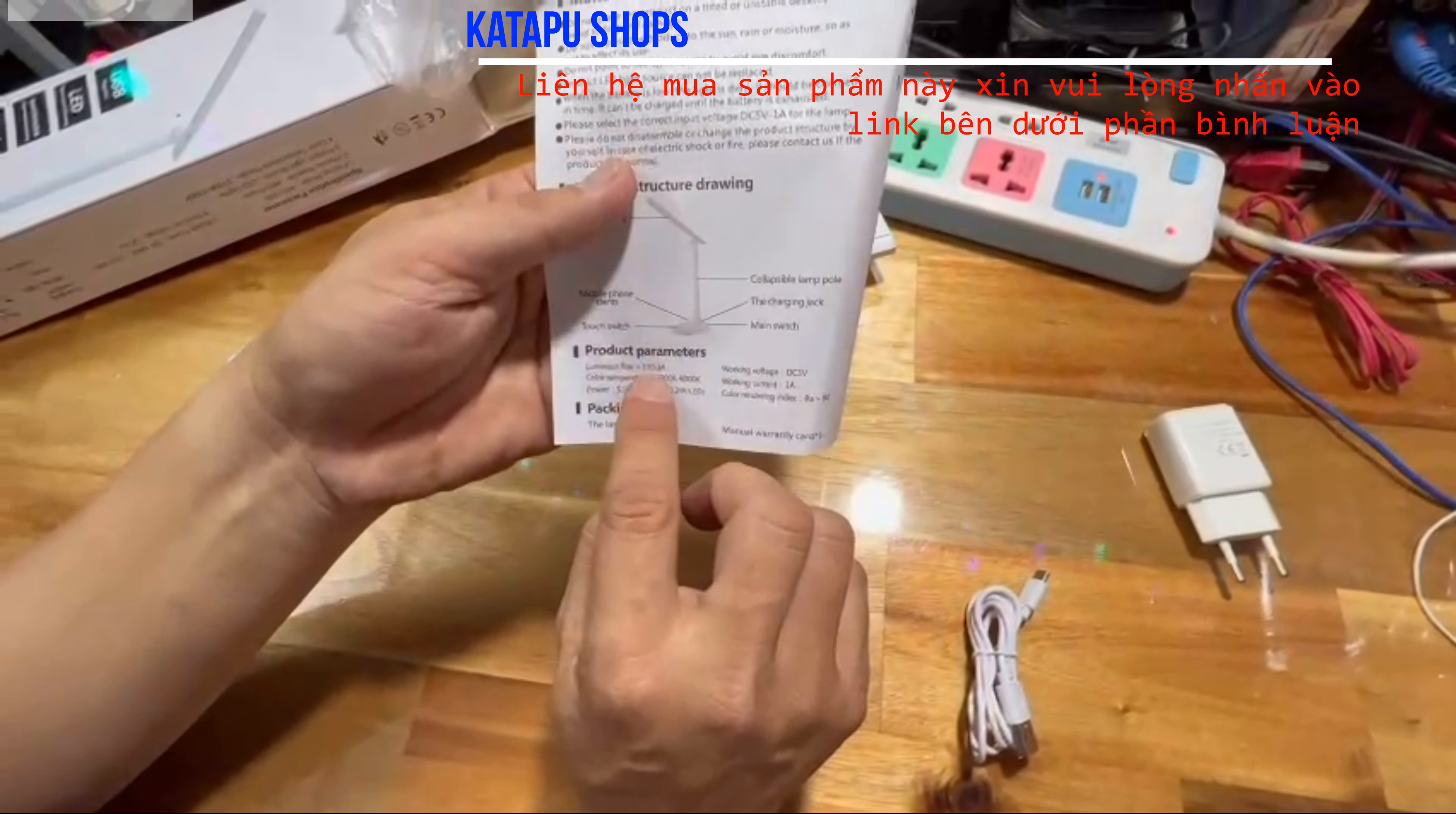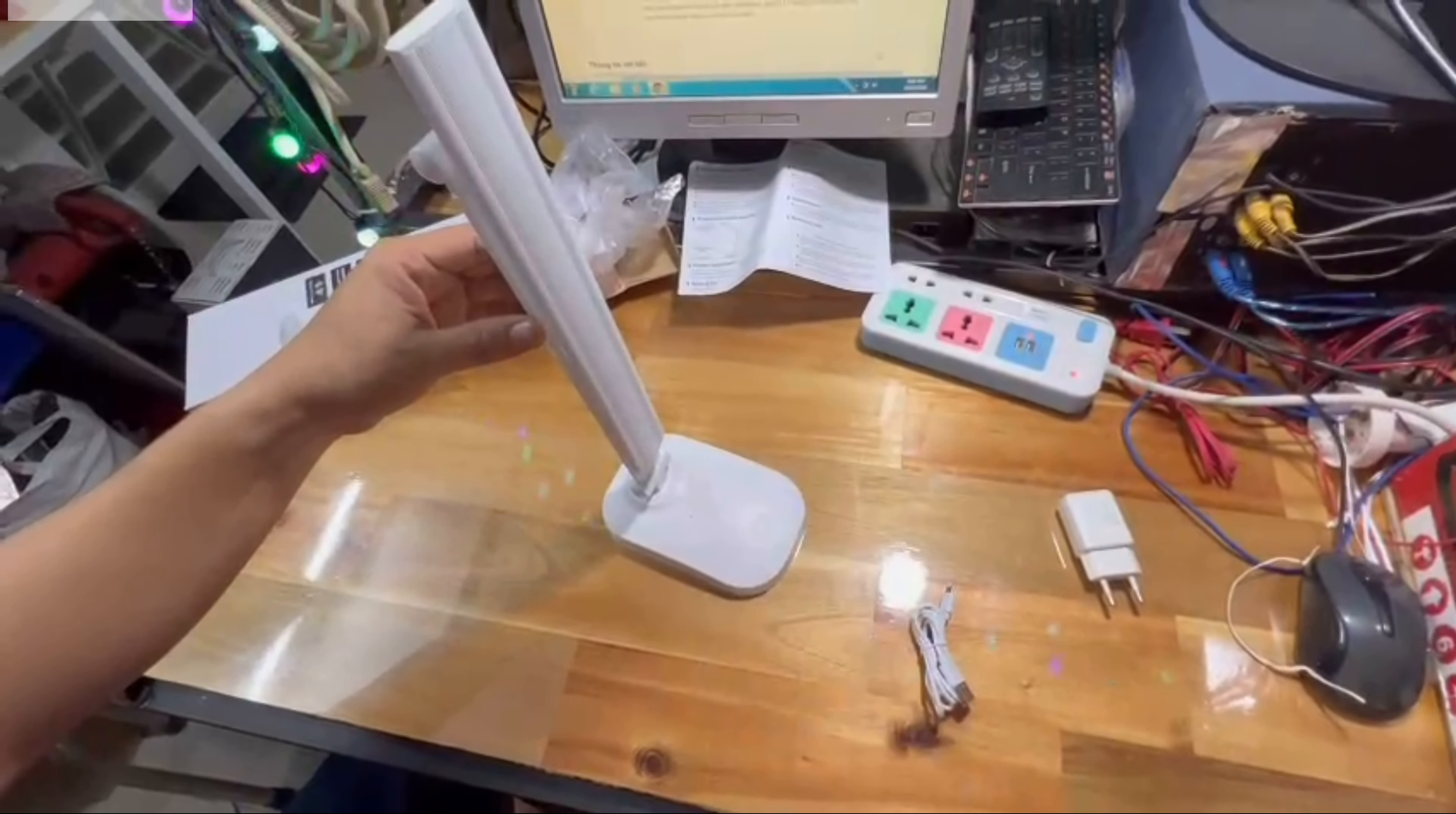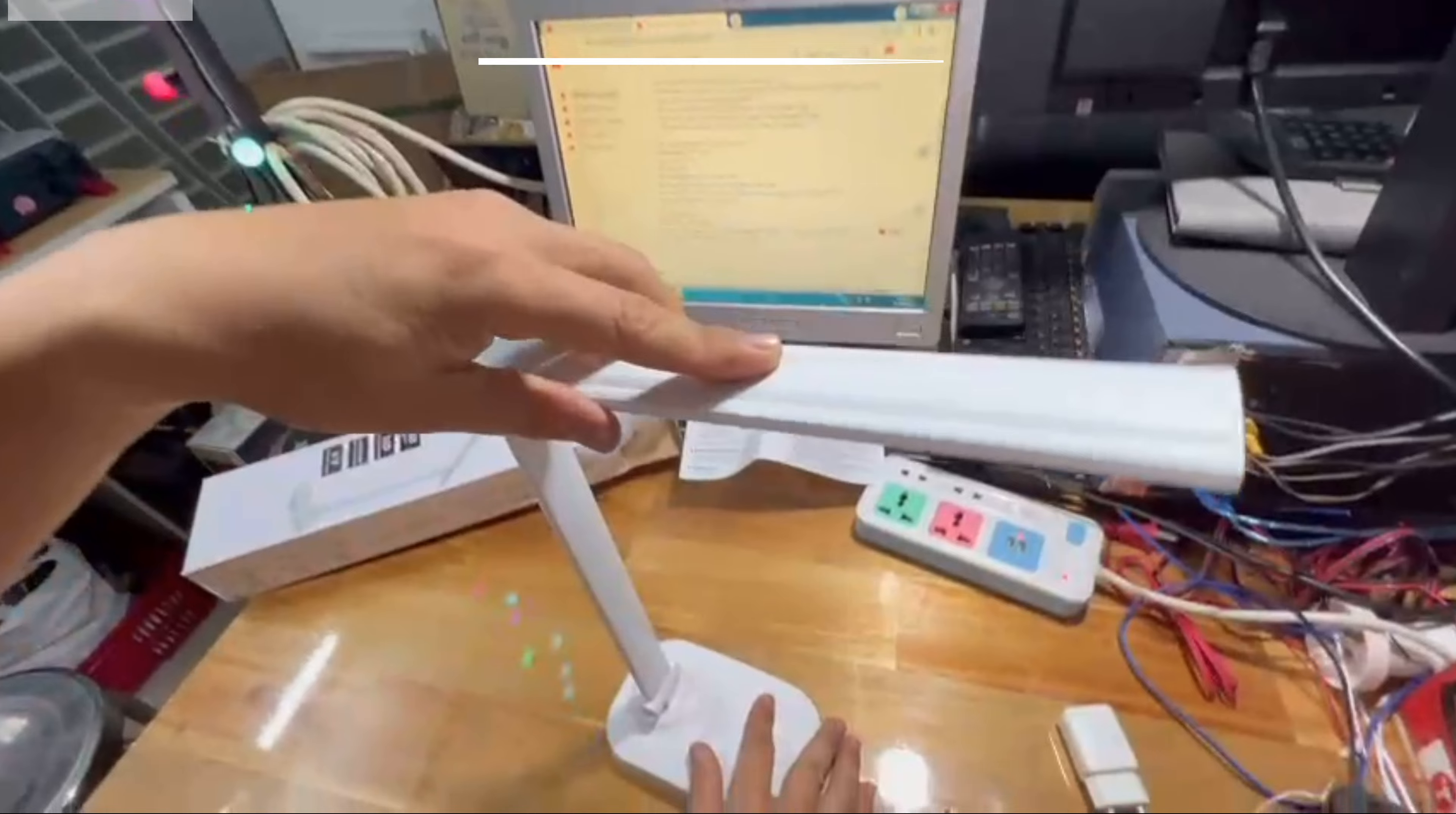Tôi sẽ thử cái đèn này. Cái đèn có hai khớp: khớp dưới và khớp trên. Mình sẽ chỉ việc bẻ lên. Ở đây nó có cái chặn, mình bẻ lên hết là nó sẽ chặn lại. Ở dưới này thì mình tự chỉnh để đưa lên cao.